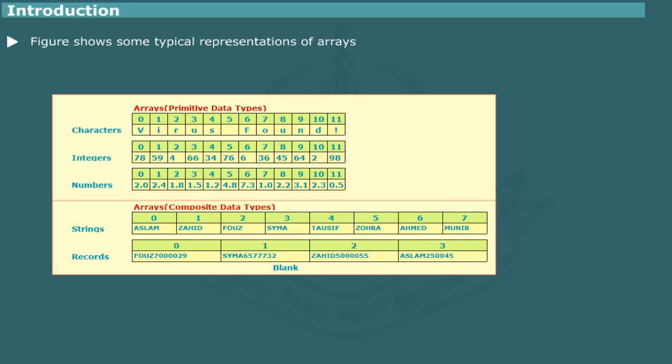Recall that a record is a collection of fields which may be of different types. Notice that in the first example, all of strings are of same length consisting of six characters. If there are fewer alphabets, the extra places are padded with spaces shown as Bs.